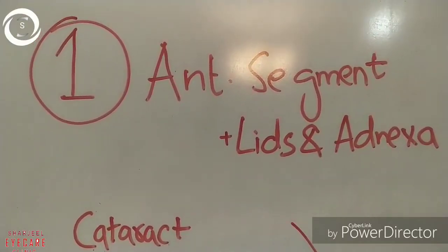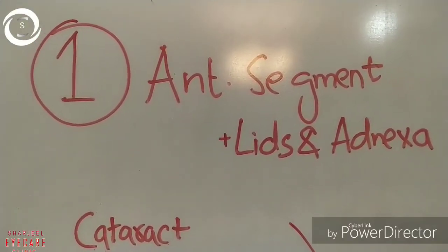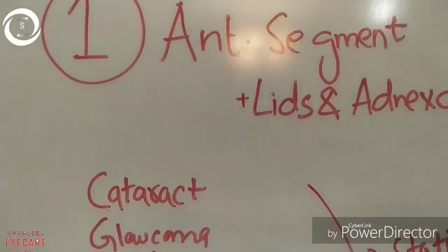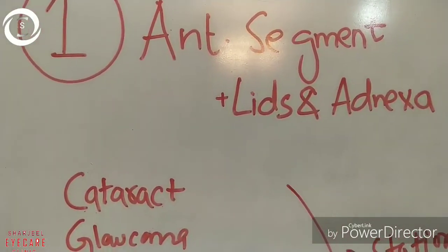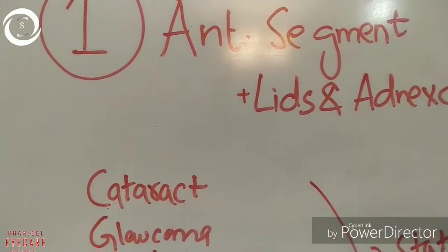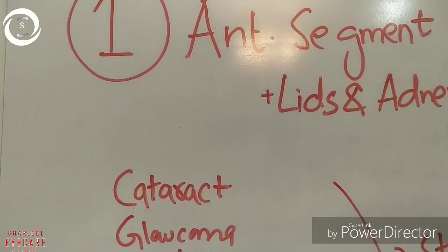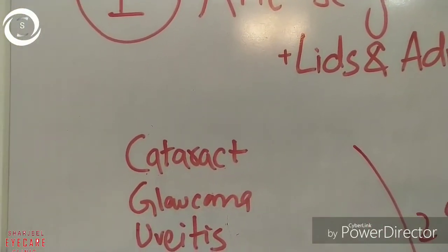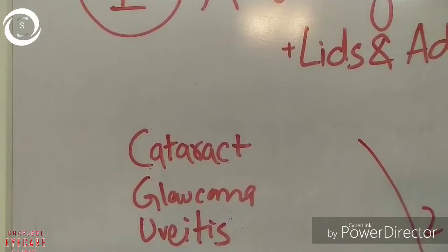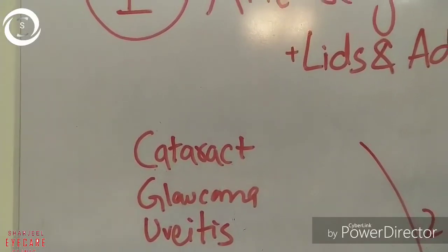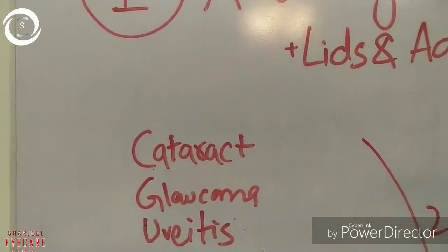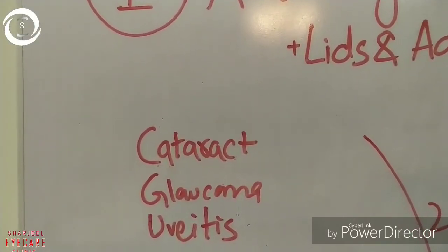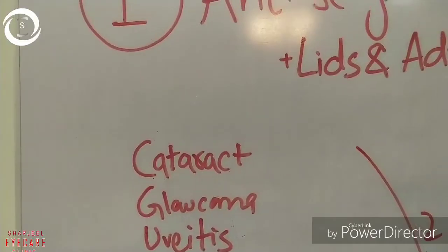In the anterior segment exam, I will show the colored picture of cataract, glaucoma, uveitis, ptosis, proptosis, lids, and conjunctiva cases. For conjunctiva I would take VKC; for lids, either ptosis or basal cell carcinoma. For cataract, we can take a simple cataract case.